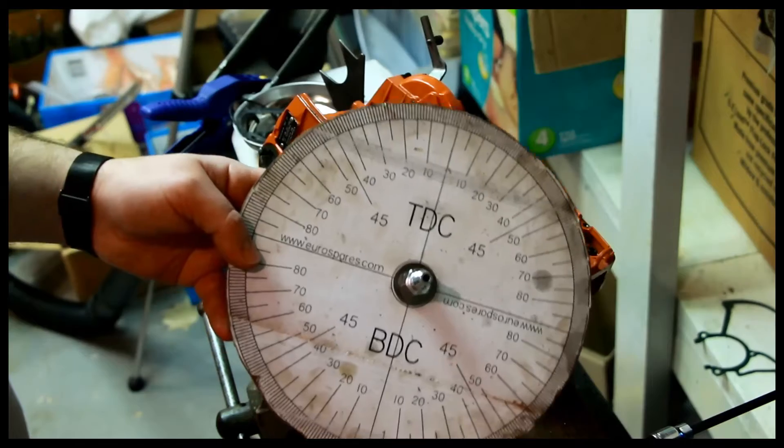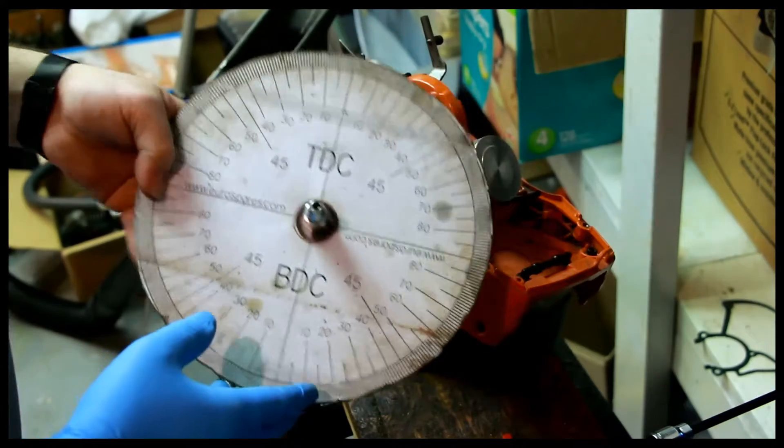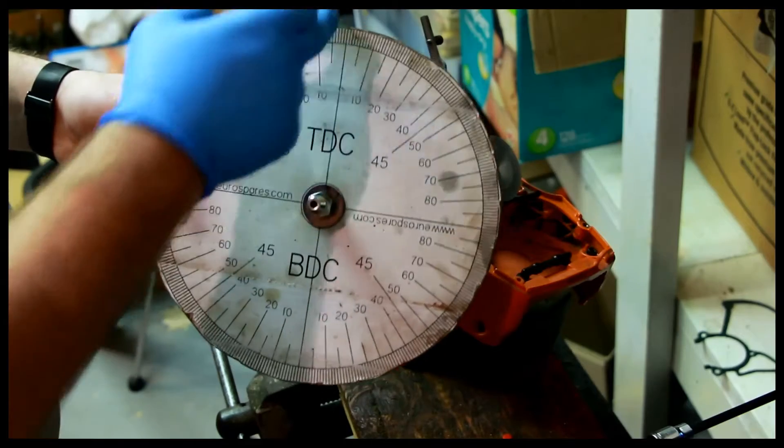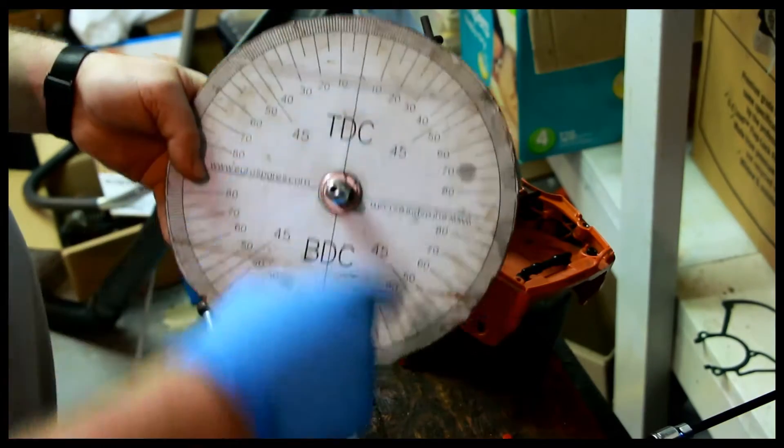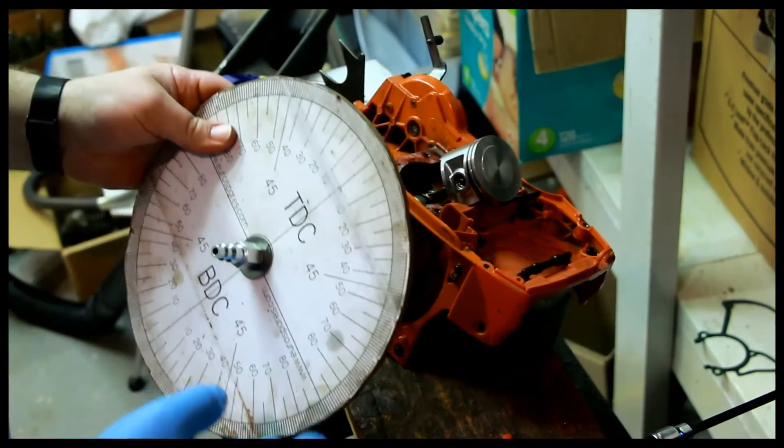This is a degree wheel, and this is a very crude degree wheel, but it does actually work. Zero or 360 is top dead center, and then bottom dead center. But you have to actually accurately orient this to top dead center and bottom dead center.